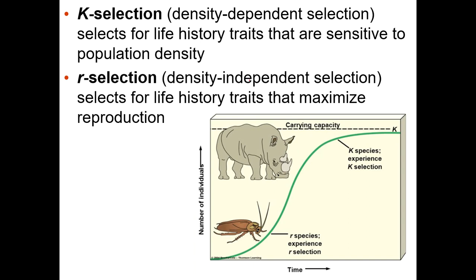R selection is density independent, meaning these populations tend to go up and down. They never quite reach carrying capacity. For example, a mosquito laying a hundred eggs — they haven't reached carrying capacity yet, but then a drought hits and most of those babies die. Once it's rainy again, they lay a huge number of eggs and the population spikes, but then it gets dry and they all die again. R-selecting organisms' populations fluctuate based on environmental factors more than competition from other mosquitoes.